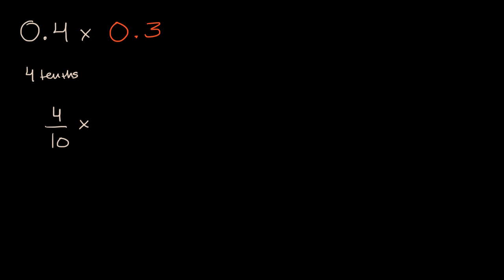And we're going to multiply that by what we have over here. This is 3 tenths, which we could write as a fraction as 3 tenths. And so you could view this as 4 tenths of 3 tenths, or 3 tenths of 4 tenths, but we're multiplying these fractions, which we've seen before in other videos. And so what's going to happen?